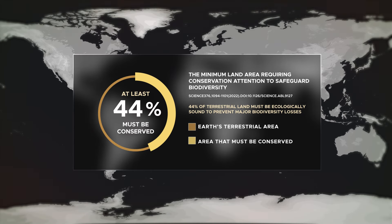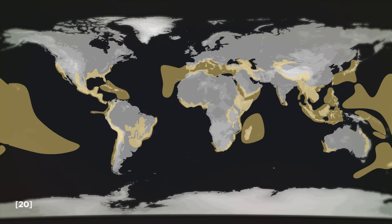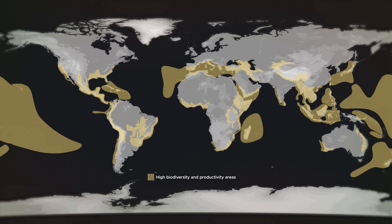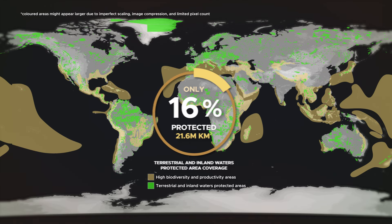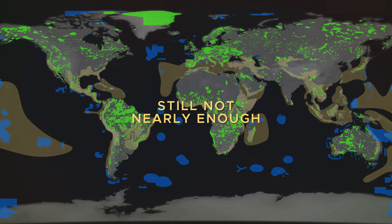According to a 2022 study, at least 44% of Earth's terrestrial surface must be conserved to prevent major biodiversity losses. Around half of our land and ocean have to be ecologically protected for wildlife, with a focus on areas with high biodiversity and productivity. As of today, only 16% of our land and less than 10% of our ocean is protected. Although they have increased rapidly in the last decade, needless to say, we're still not doing nearly enough.